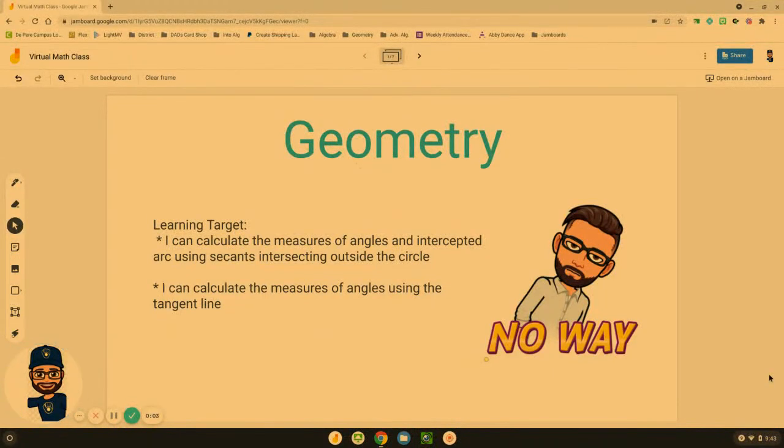Hello geometry students and welcome back to another video lesson where we continue on with secants and tangent lines of a circle. Today we're going to be looking at what happens when they intersect outside of the circle or what about tangent lines that intersect the circle exactly once.